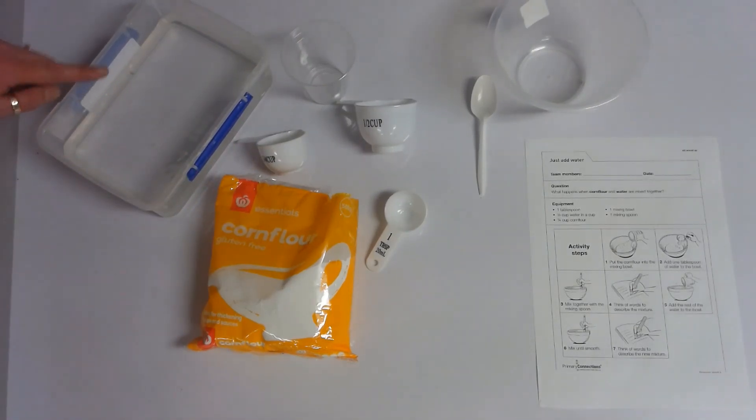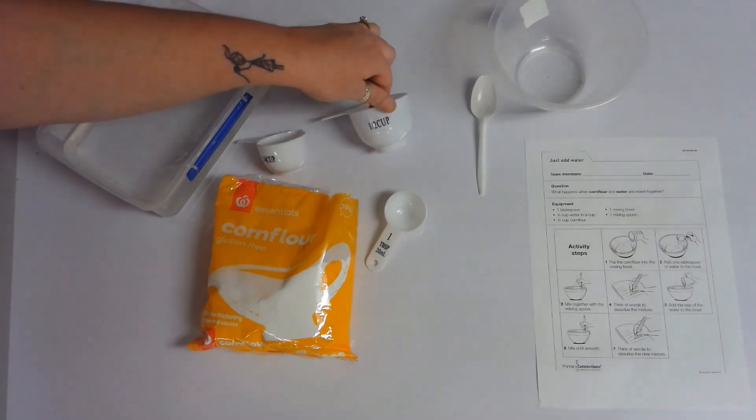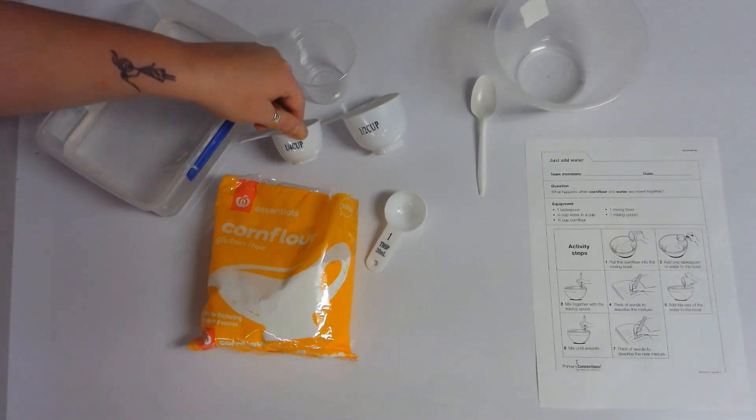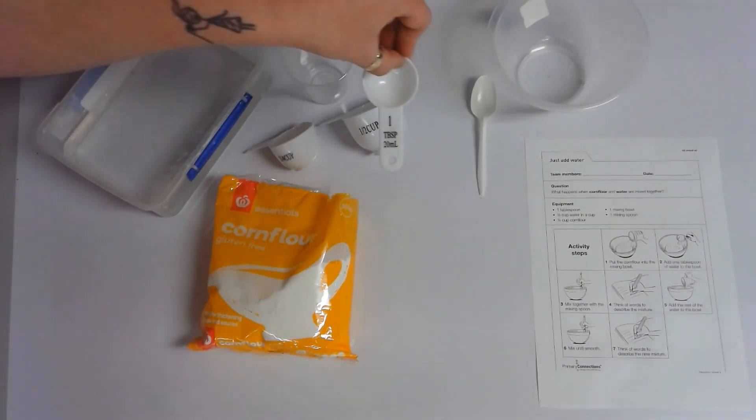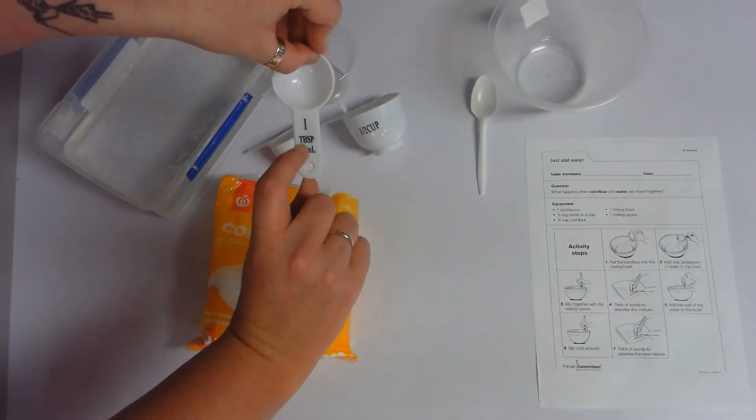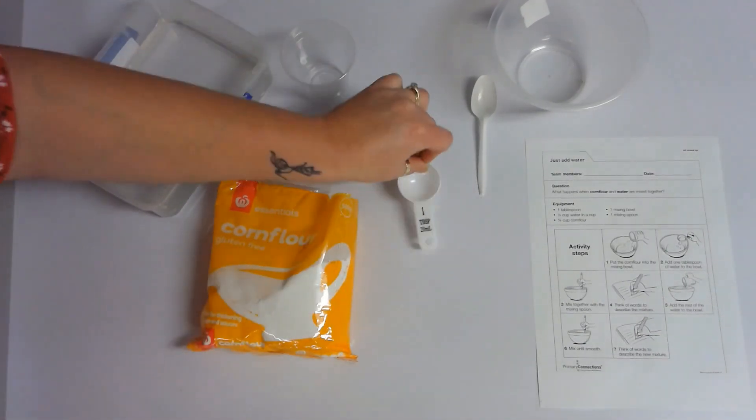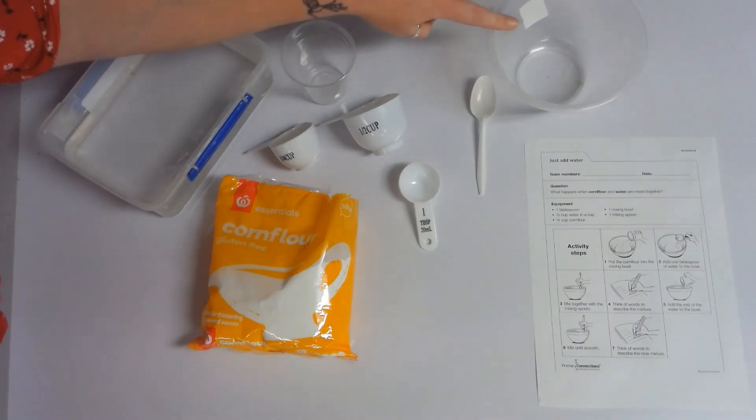You'll also need some water, some cup measures. We have half a cup here, a quarter of a cup here, one tablespoon. That's the words with TBSP in big letters. A mixing spoon and a mixing bowl.